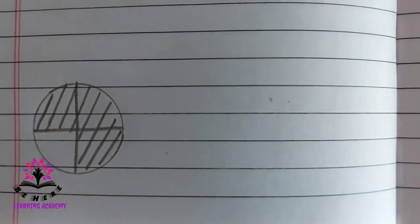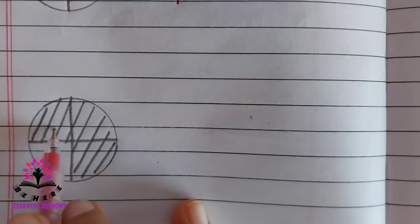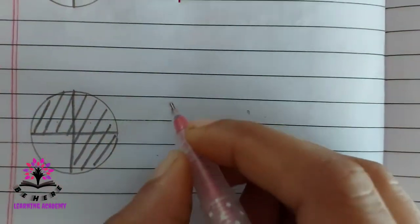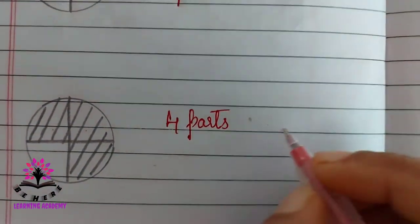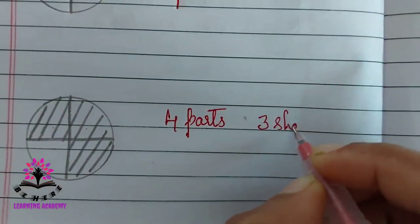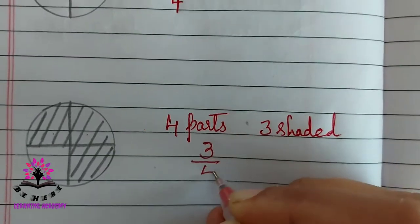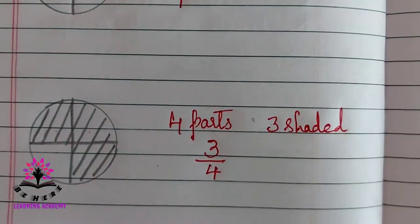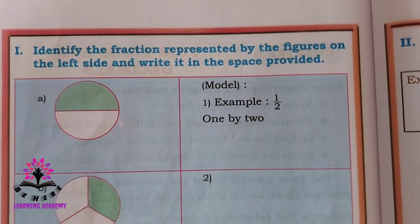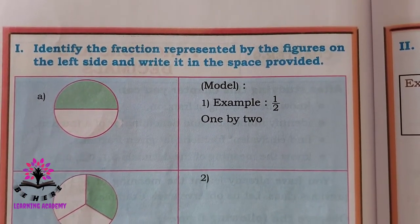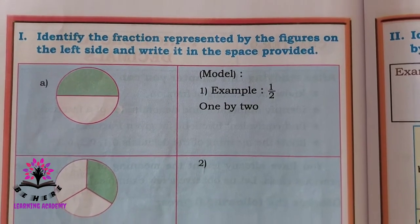See the next one. Here there are four parts — the circle is divided into four parts — and three parts are shaded. So you can write this as three by four, or three divided by four. Now identify the fractions represented by the figures on the left side and write in the space provided.